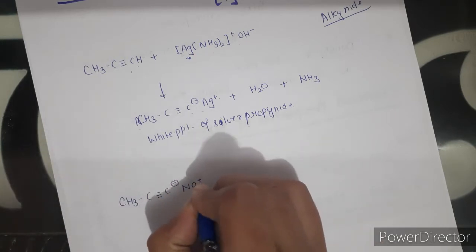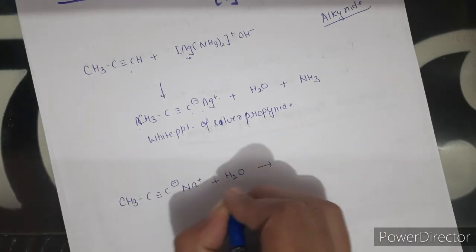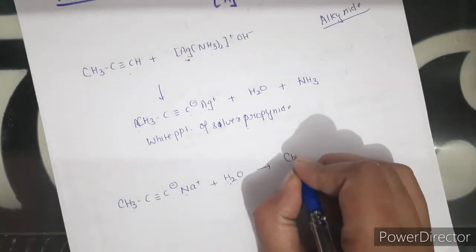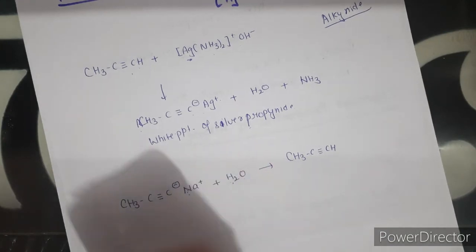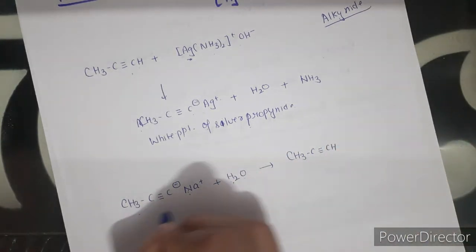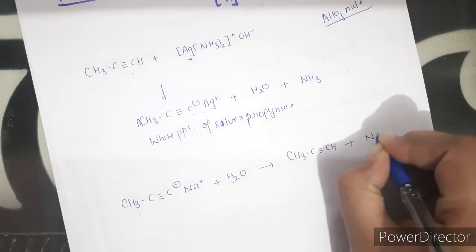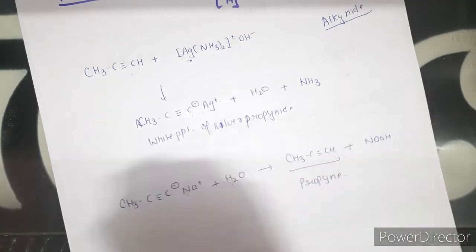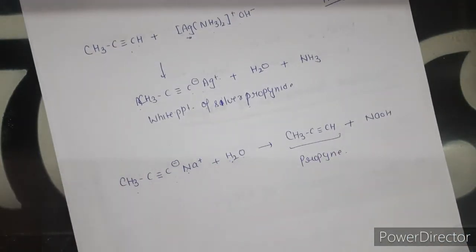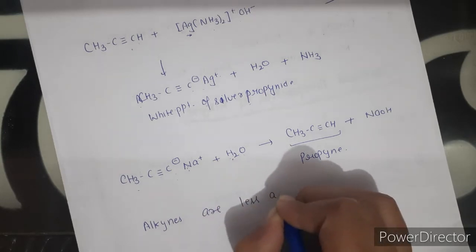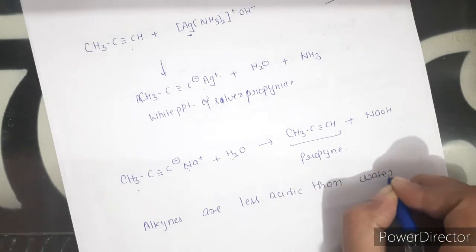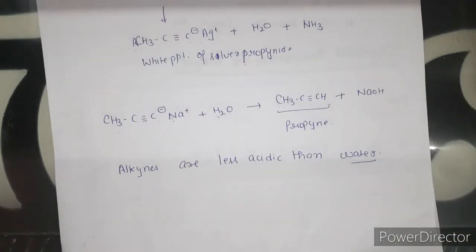When we add water and react with silver alkynide or sodium alkynide, the H⁺ of water further replaces the Na⁺ or Ag⁺ metal, converting back to the corresponding alkyne. This shows that alkynide is less acidic than water. Alkynes are acidic, but their acidic character is very low — they are even less acidic than water.